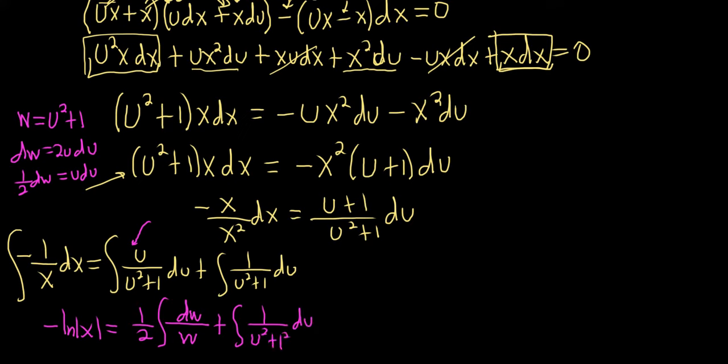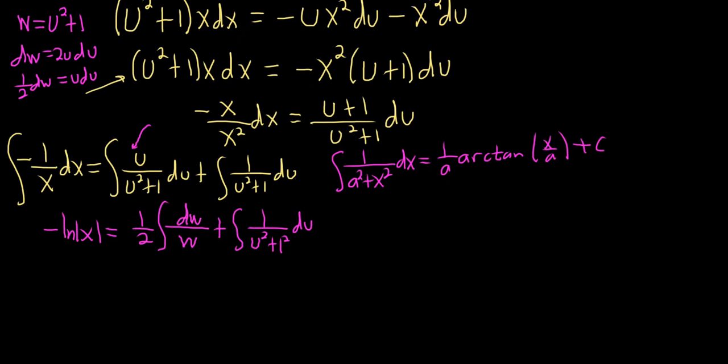And I'd say, why'd you write 1²? Because there's a formula. If you have the integral of 1 over (a²+x²)dx, this is equal to (1/a) arctan(x/a) plus c. So here, our a is 1. So this will be - negative ln|x| equals ½. This is an ln again, absolute value of w, but w is u²+1, so I'm going to skip a step here. Plus, and this is 1 over 1, arctan(u/1). And then let's go ahead and put the c. We're almost done.